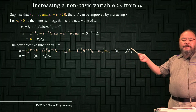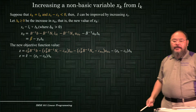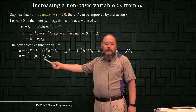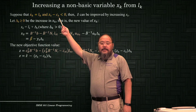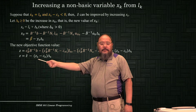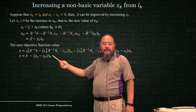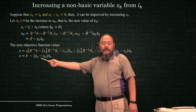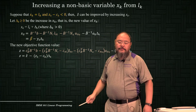The change in the objective function is negative zk minus ck times delta_k. So if zk minus ck is negative, then the negative of a negative will be positive, times delta_k which is positive. So this will increase my objective function value.